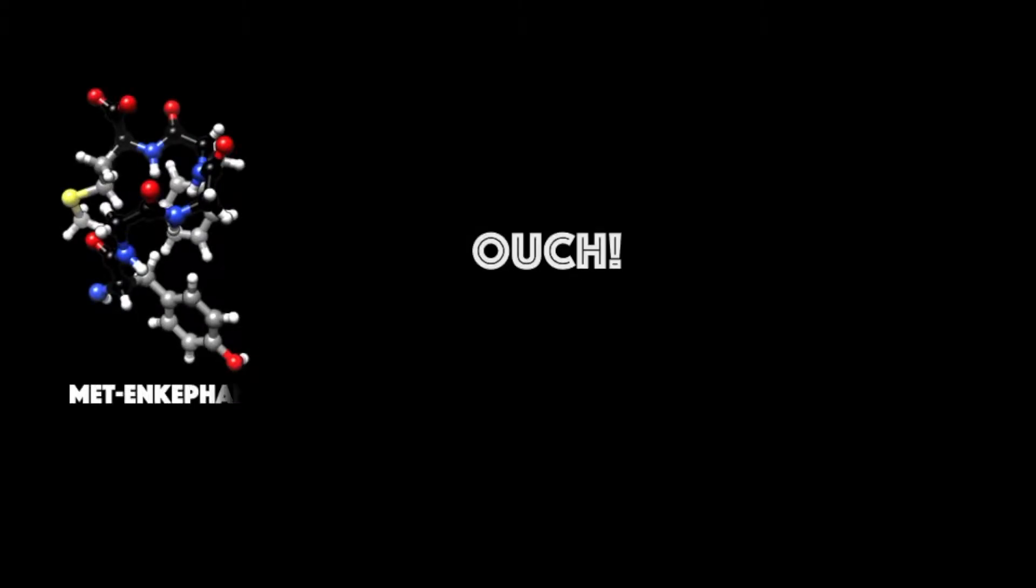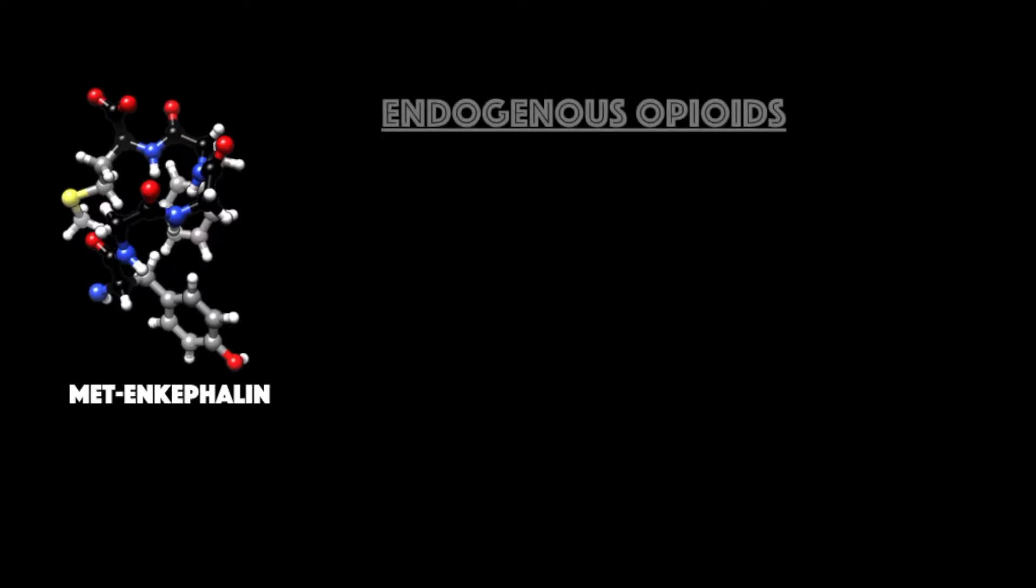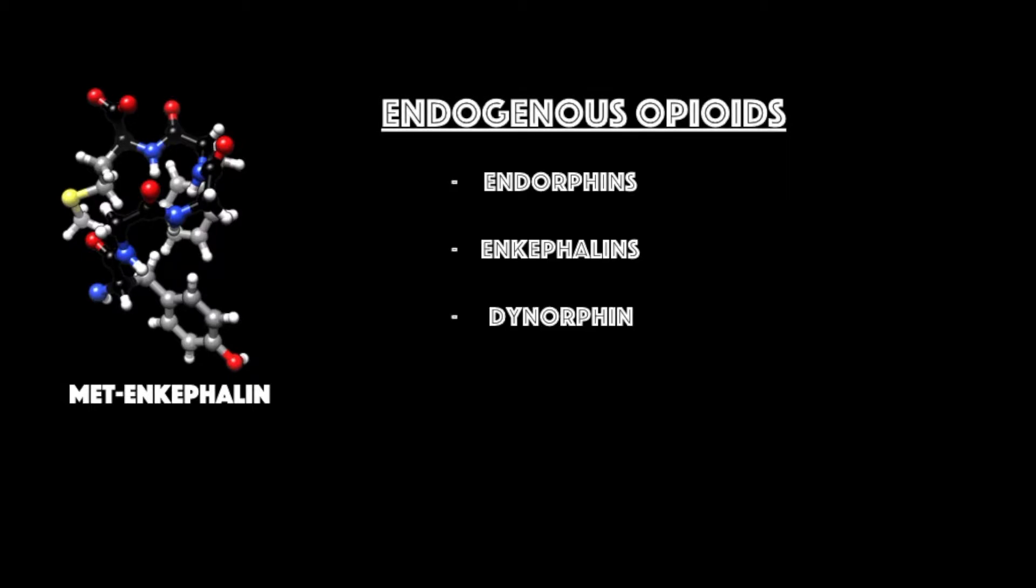Say someone falls to the ground and hurts her knee. In this case the body will release what are called endogenous opioids to help her out against the pain. These include endorphins, enkephalins, and dynorphin.